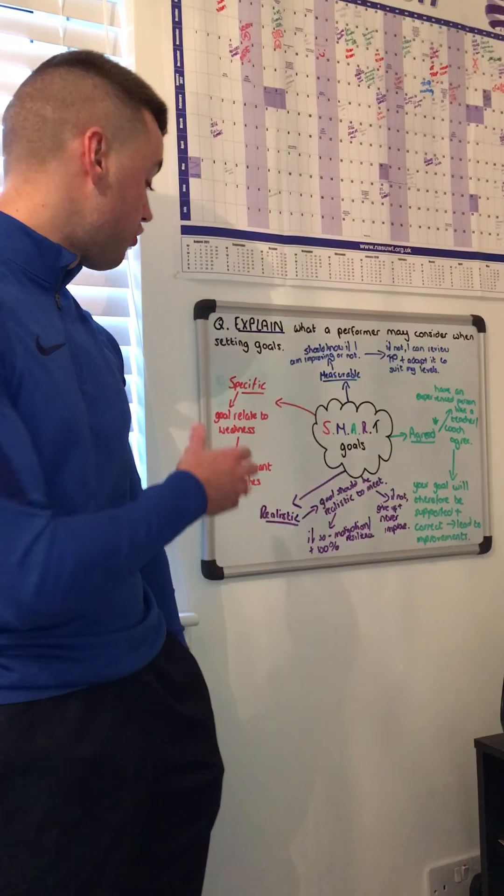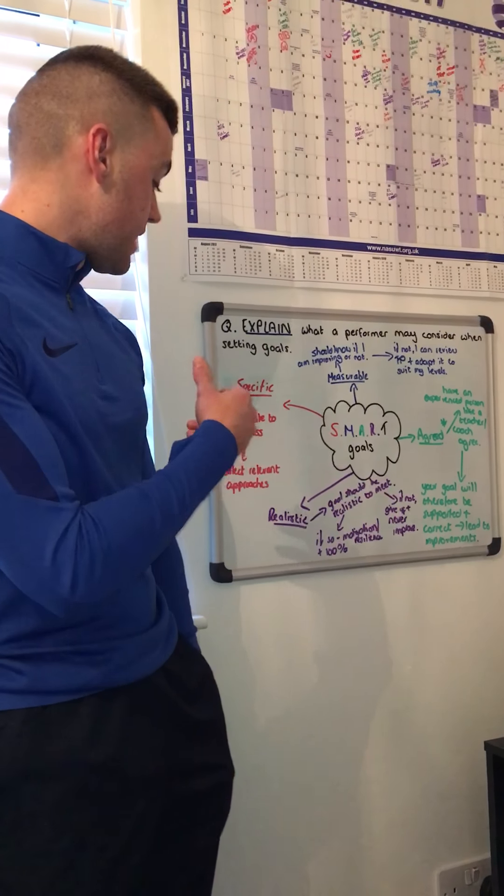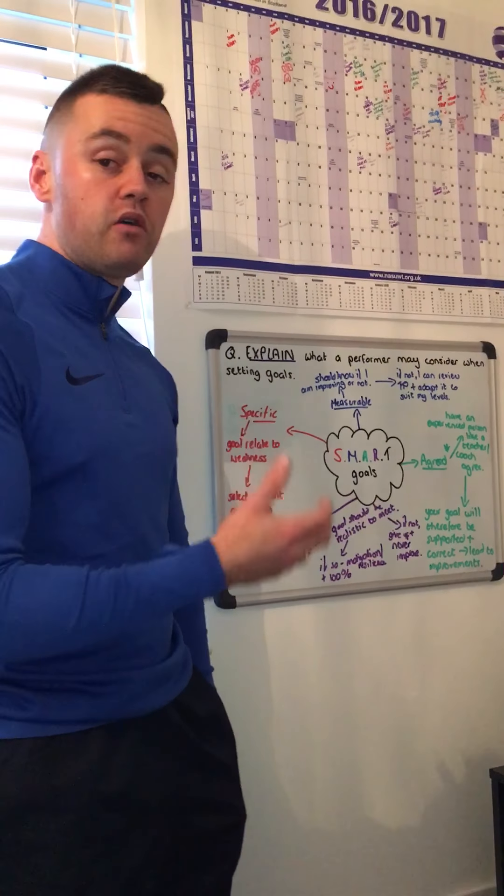This video will look at explaining what a performer may consider when setting goals before their training programme. Now again, like the previous question, 'explain' is asking you to actually justify why you might use something. So for example, we will use the acronym SMART.